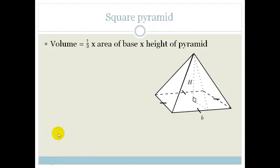So for a square pyramid the volume equals a third times the area of the base times the perpendicular height of the pyramid.